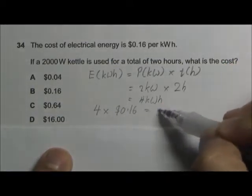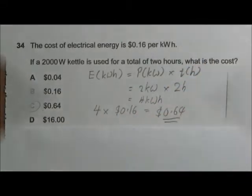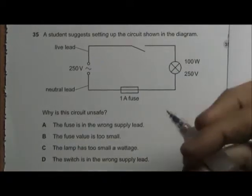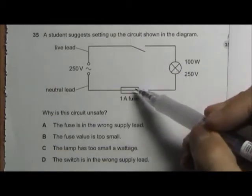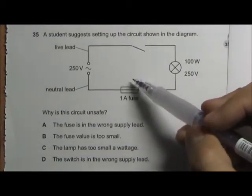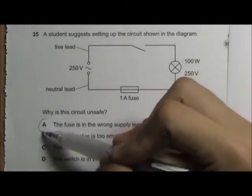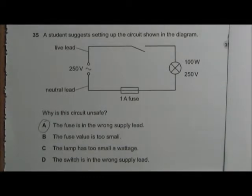We are asked to identify the mistake in this circuit. Basically, the fuse is connected on the wrong wire. It should be on the live wire instead of the neutral wire. So the answer is A.